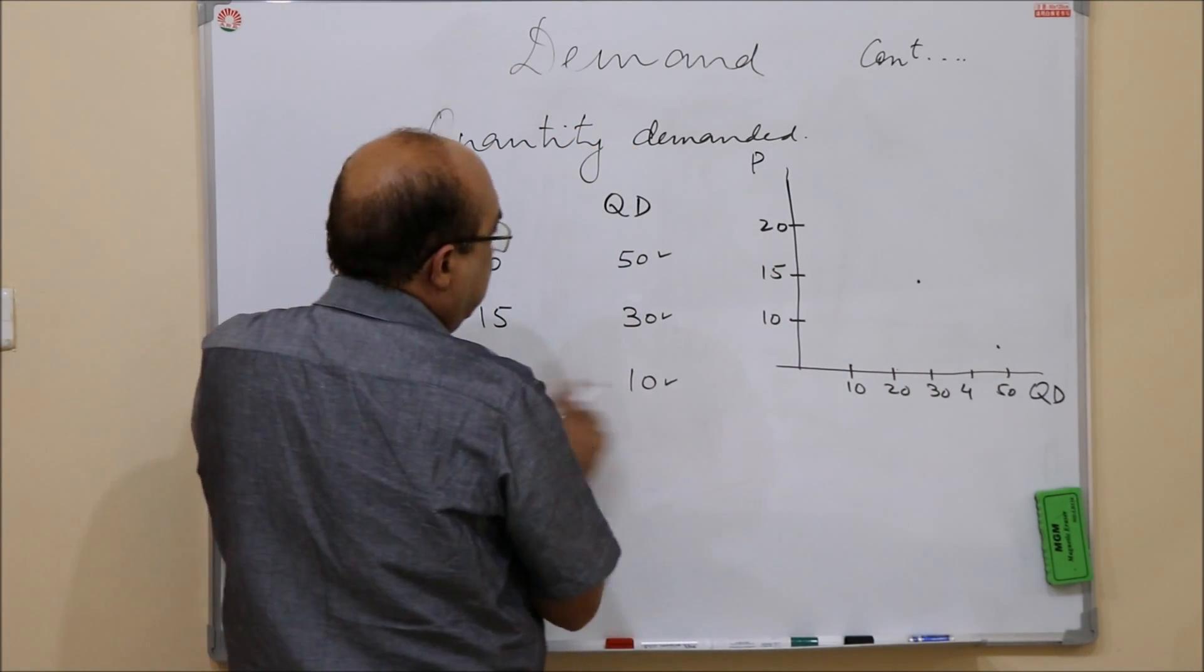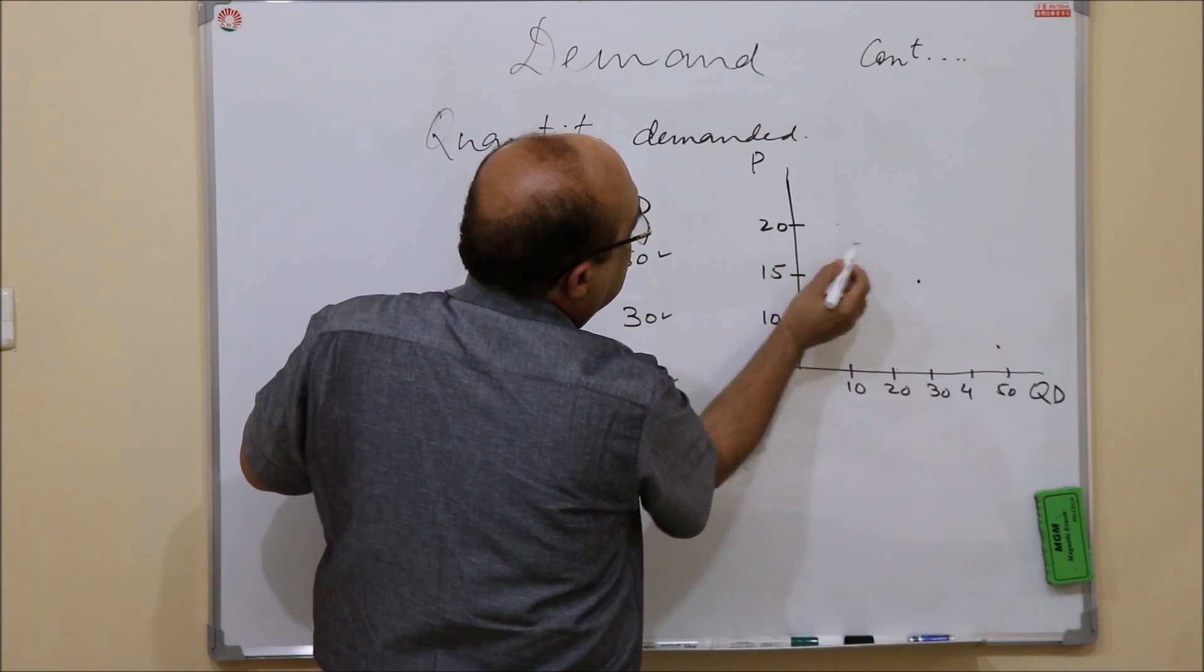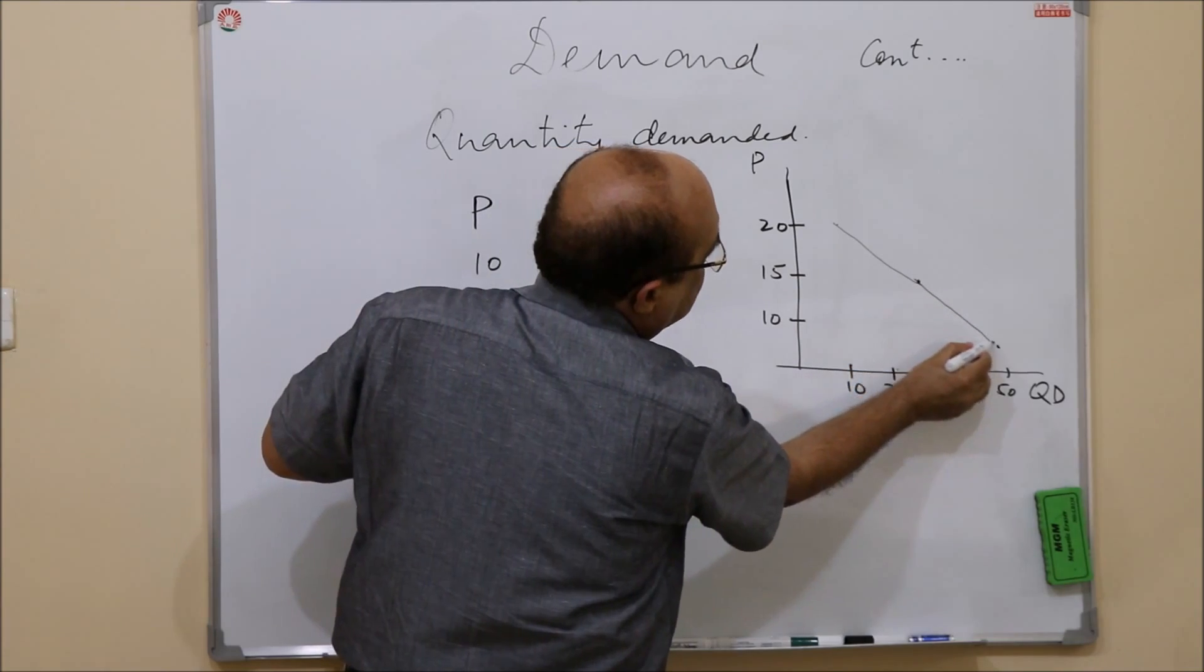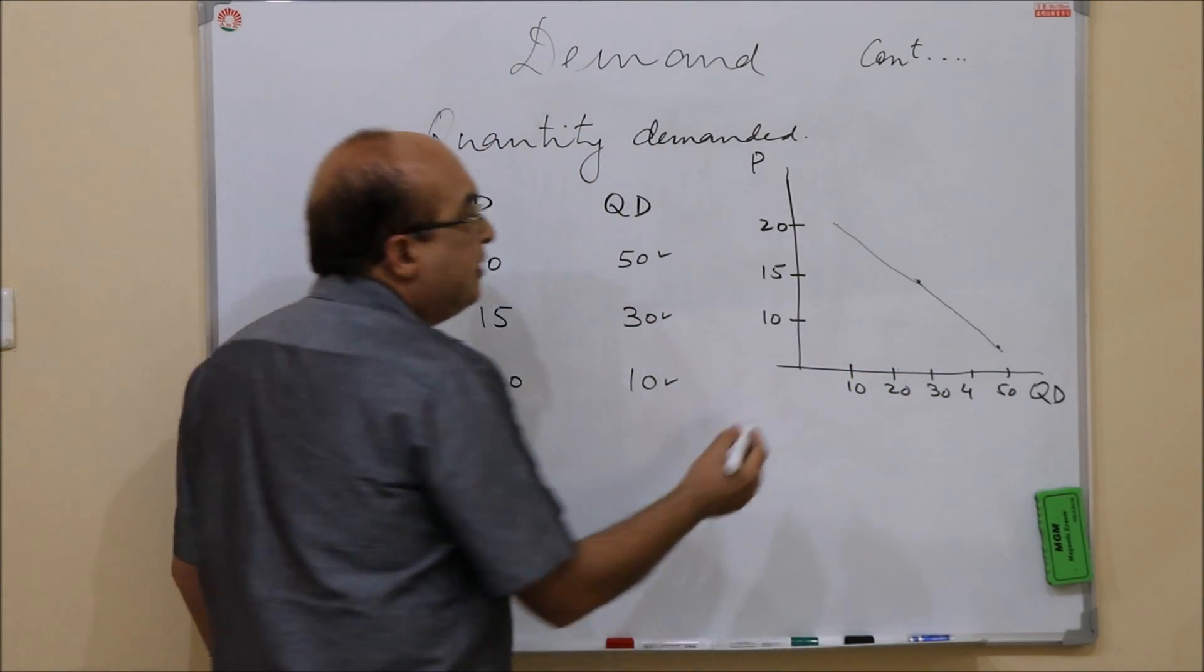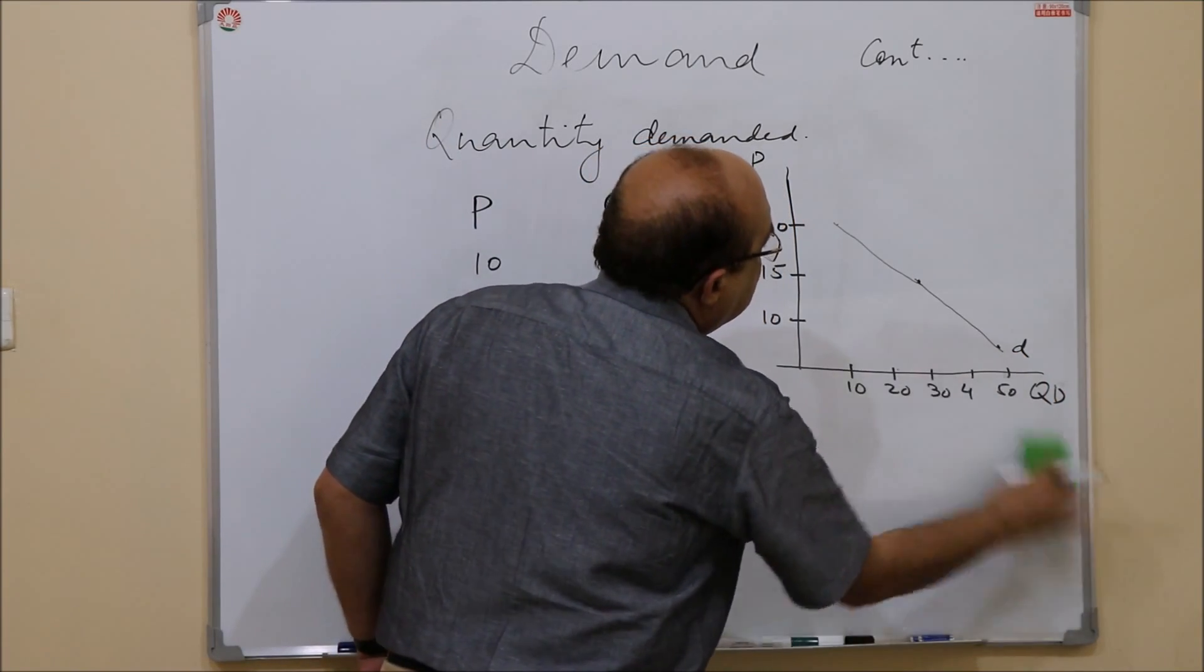And when the unit price was 20, quantity demanded was 10, so you will get a point here. And when you join these points you will get what is known as the demand curve, or simply the demand. Let me draw a straight line.